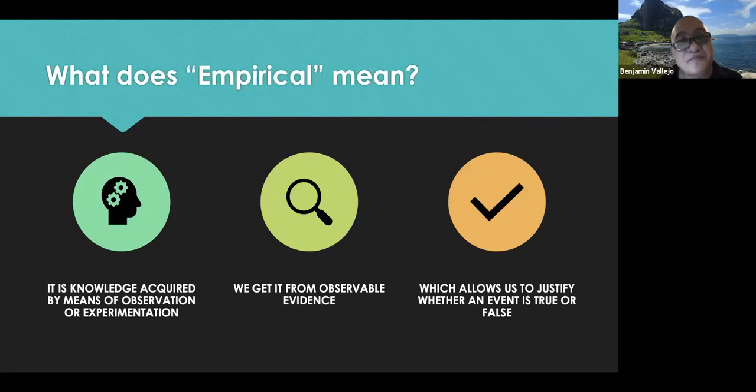The first two words refer to what we call epistemology in philosophy, which is the branch of philosophy that deals with how knowledge is acquired and understood. The last two words, systematic methodology and evidence, is actually the process part of doing science. Science is empirical, which means knowledge acquired by means of observation or experimentation from observable evidence.